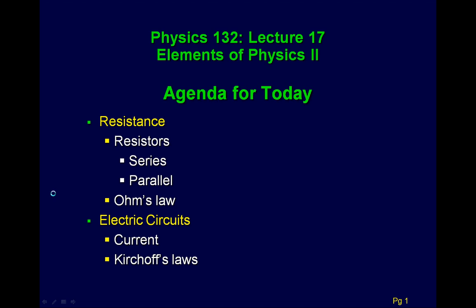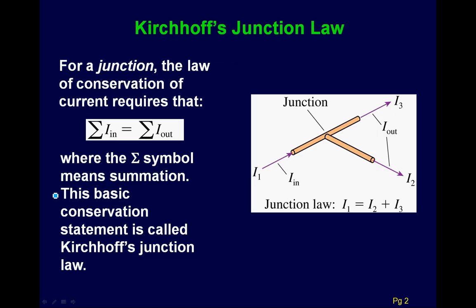We're going to finish up Chapter 31 by showing how you can use Kirchhoff's rules to solve more complicated circuits. Let's go over the rules again. There's the junction rule that says the current coming in must equal the current coming out. So at a junction, the current coming in is I1, and that equals I2 plus I3 leaving. Every time there's a junction, you can write down an equation like this.